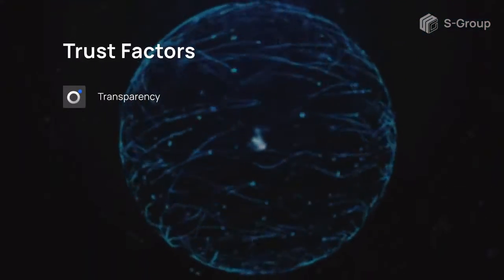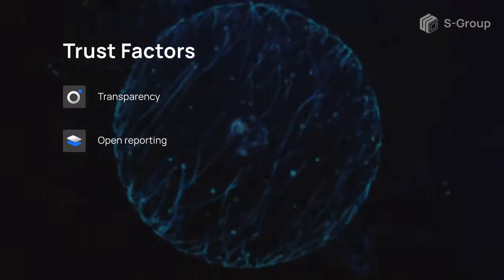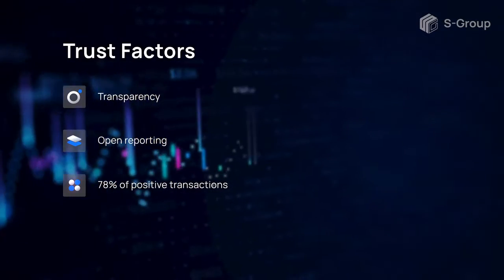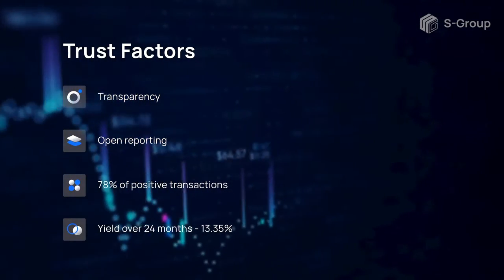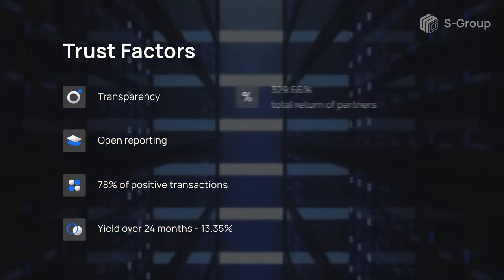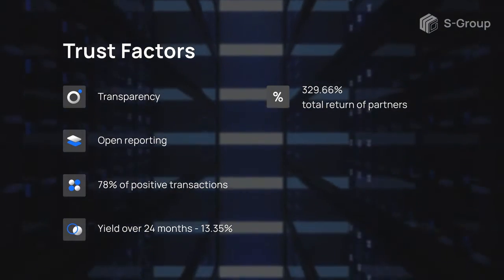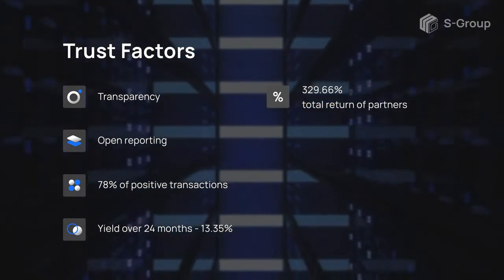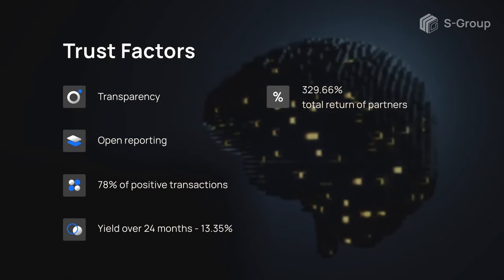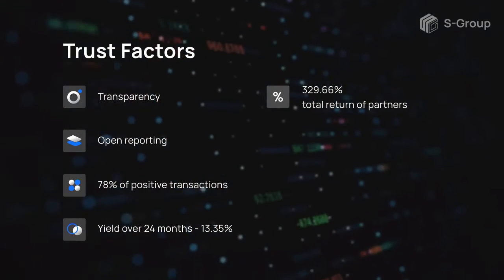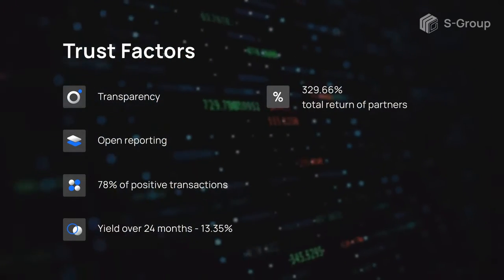S-Forex trading platform is trusted more than any other public pool due to the following factors: full transparency of activities, open access to account statistics and real-time trading reports, and over 78% positive transactions. The average monthly return on investment for 24 months is 13.35%, with a 329.66% total income from public pool work on simple interest, which partners have already earned together with S-Forex. Total income for the entire period of public pool operation, as of the 4th of May 2021, amounted to 369% and 3,111% with the reinvestment of monthly income.